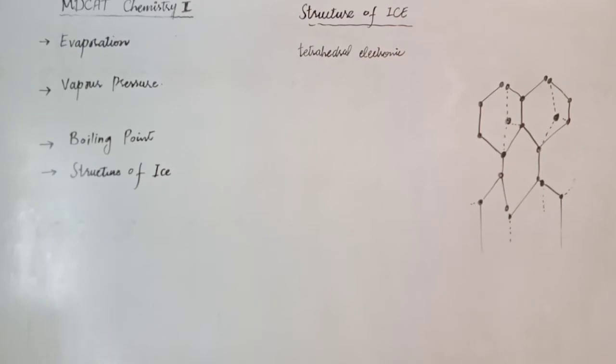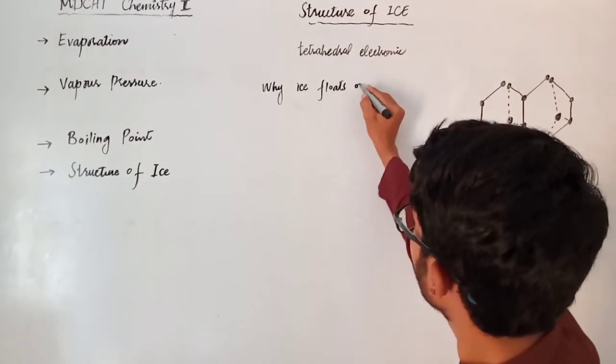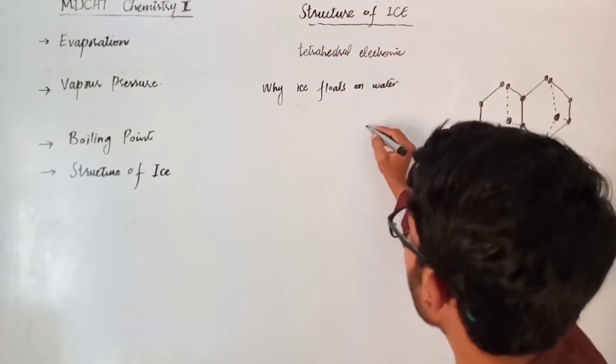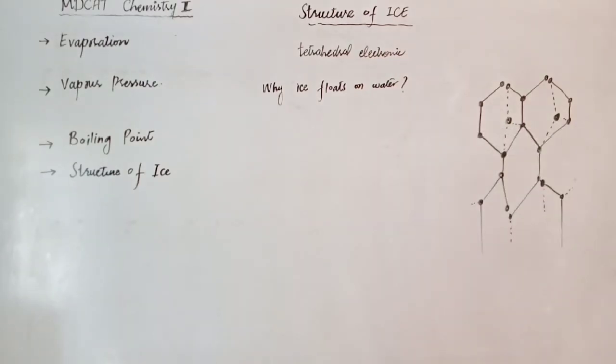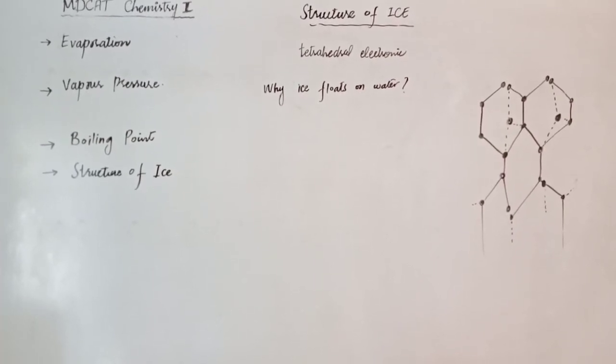So students, this is very important: why does ice float on water? So what is the reason? The answer is related to the structure of ice compared to liquid water.